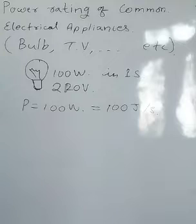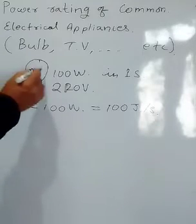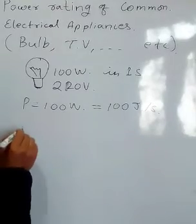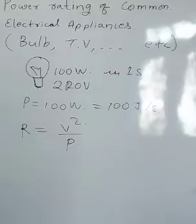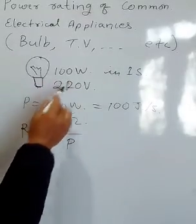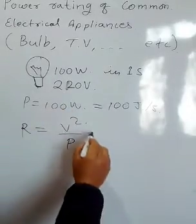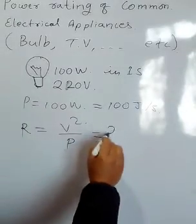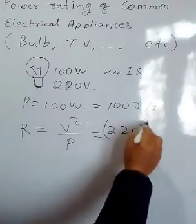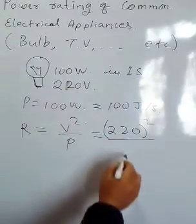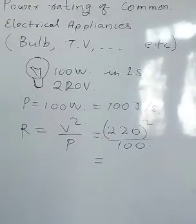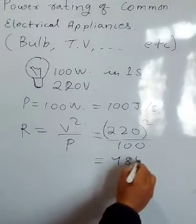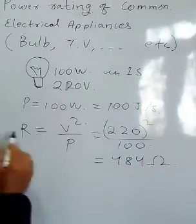Now you can find its resistance. To find the resistance inside this bulb, we have the formula R = V²/P. If this is 100 watt which works on 220 volt, then V is 220 volt squared divided by power which is 100. If you solve it, you'll get 484 ohm. Its resistance will be 484 ohm when it is in use.